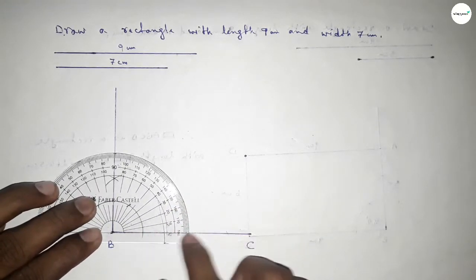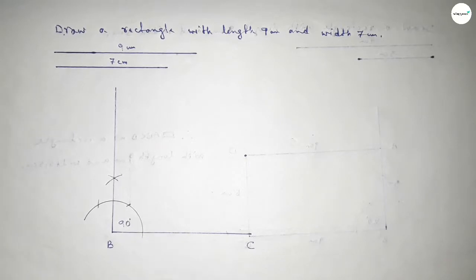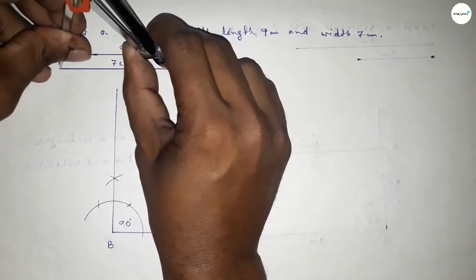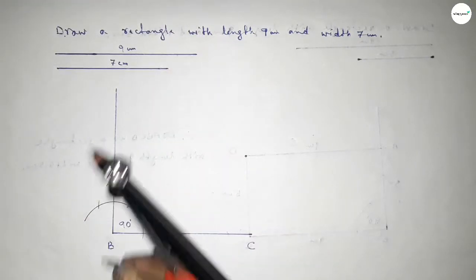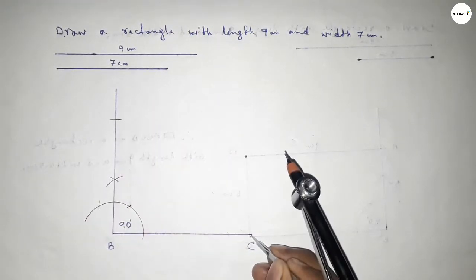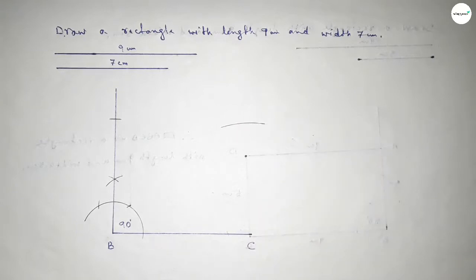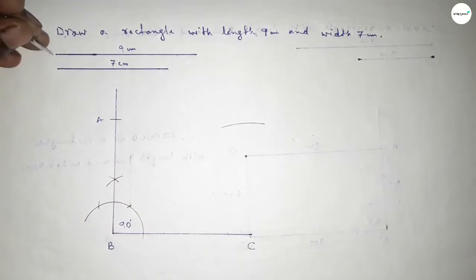This is perfectly a 90 degree angle. Now taking the length 7 centimeters by using the compass, putting the compass here and cutting here, then drawing an arc and taking here point A.